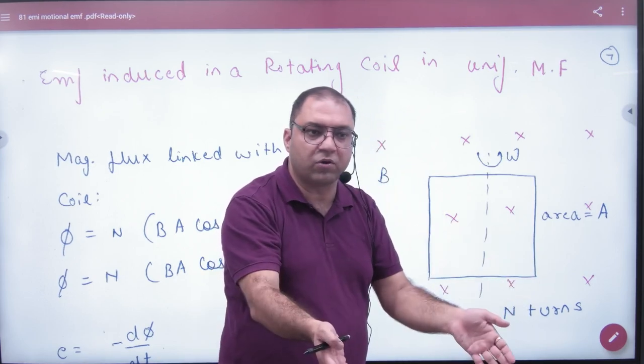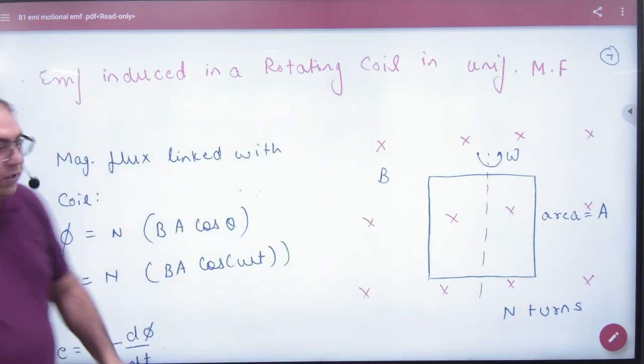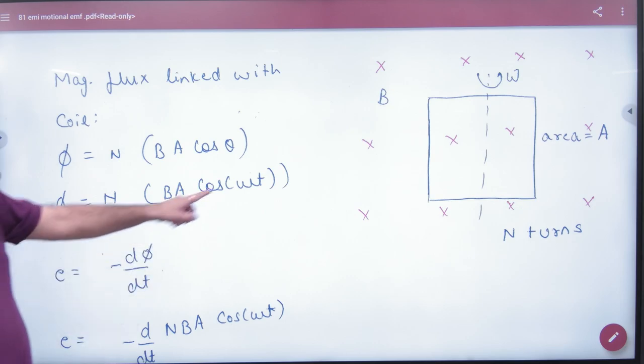In uniform circular motion, theta is always omega t. Standard angle is omega t, rule number one. Flux will be cos theta, and the number of turns will be n. In circular motion, theta is omega t.